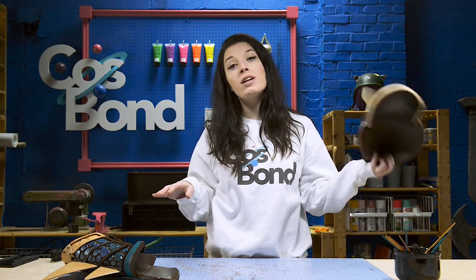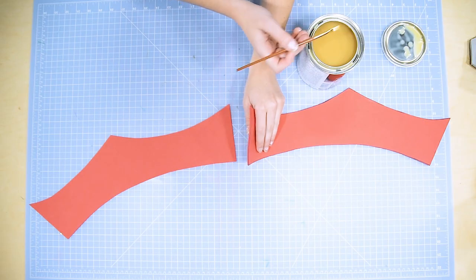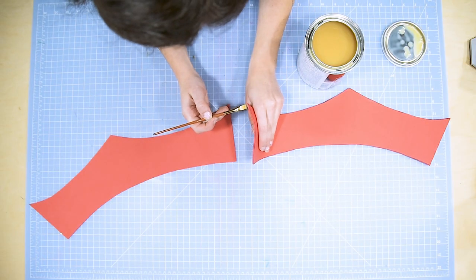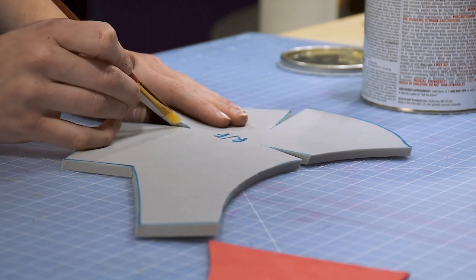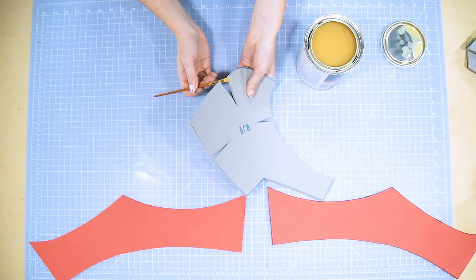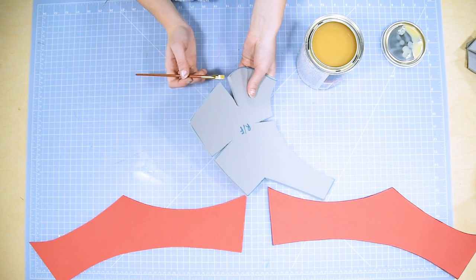Once everything is cut out, we can begin gluing them together. I use contact cement to glue these pieces. Contact cement works well for pieces with constant pull, but always make sure to wear a mask when using it because the fumes are very toxic.